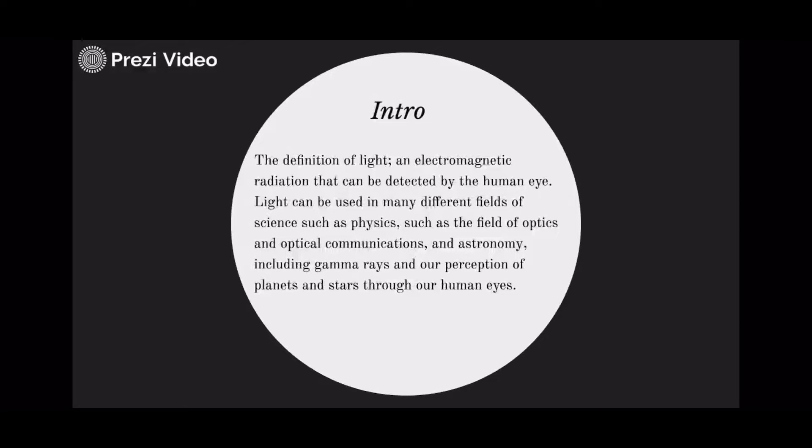The definition of light: an electromagnetic radiation that can be detected by the human eye. Light can be used in many different fields of science, such as physics, in the field of optics and optical communications, and astronomy, including gamma rays and our perception of planets and stars through our human eyes.